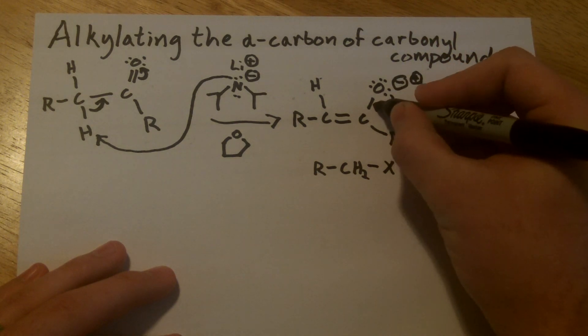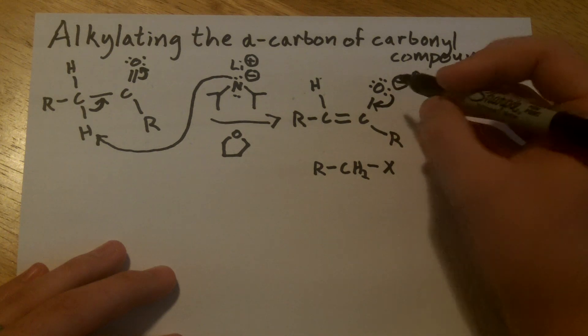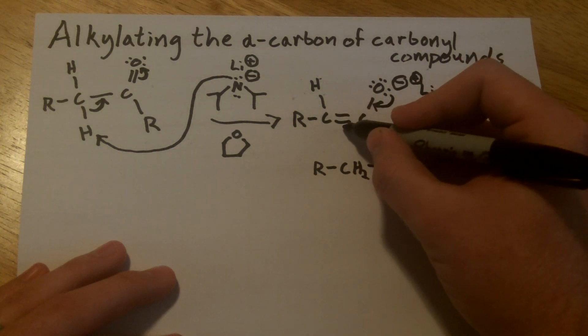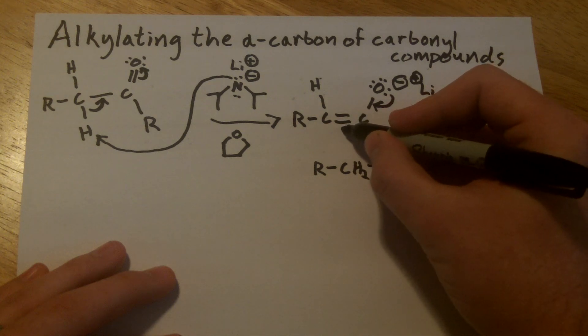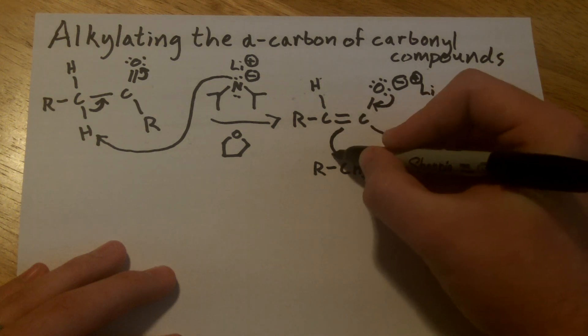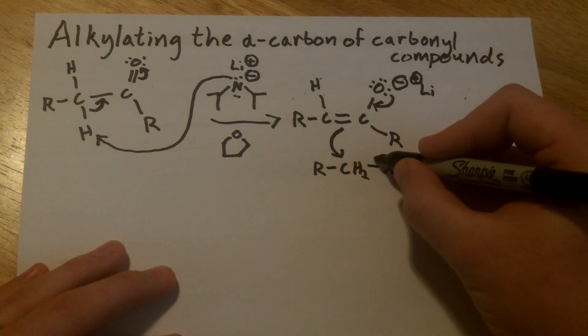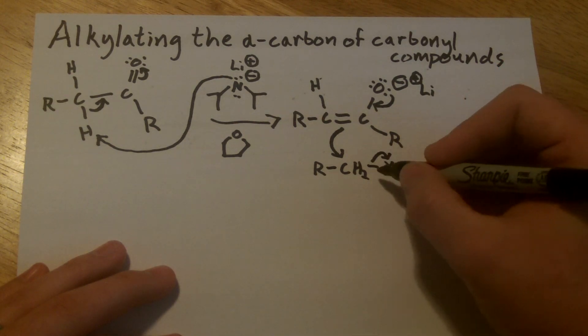So actually what they're going to do is they're going to come back and reform the pi bond in the carbonyl, which is going to cause the pi bond between the carbonyl carbon and the alpha carbon to be broken. And through an SN2 reaction, the halogen on the alkyl group that you're trying to add will be removed.